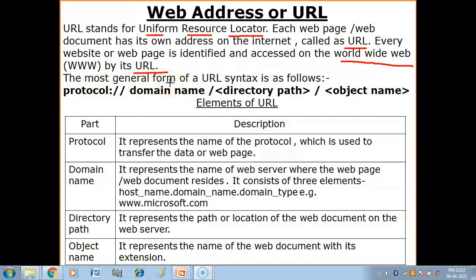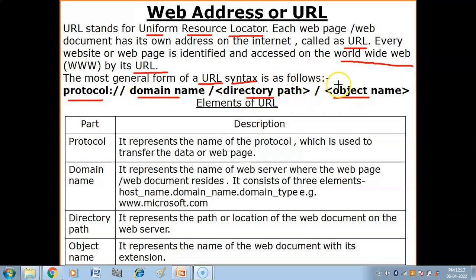The most general form of URL syntax is as follows. Ab URL ko kaisa define karo ge, uska syntax kya hai, let us see. First we have the protocol, then domain name, then directory path, and then object name. Now we will understand it one by one.